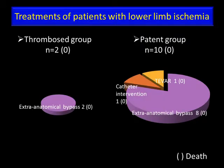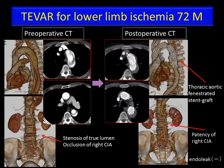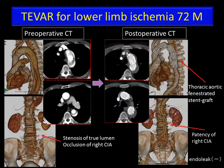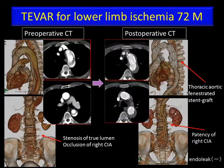This slide shows the treatment of patients with lower limb ischemia. In the thrombosed group, two patients had lower limb ischemia, and in the patent group, 10 had lower limb ischemia. All of them were discharged in good condition with various treatments. A case in the patent group is shown: TEVAR with a thoracic aortic fenestrated stent graft was performed. The false lumen of the thoracic aorta became thrombosed, and the left common iliac artery was successfully salvaged.